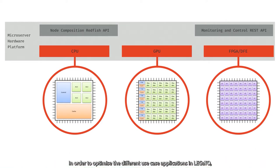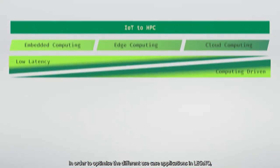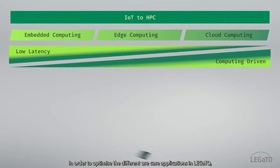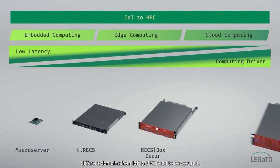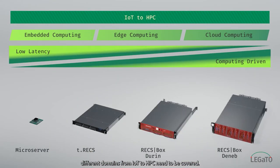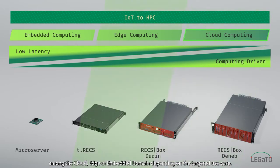In order to optimize the different use case applications in Legato, different domains from IoT to HPC need to be covered. Using a microserver-based approach, we can configure the optimal hardware among the cloud, edge or embedded domain, depending on the targeted use case.